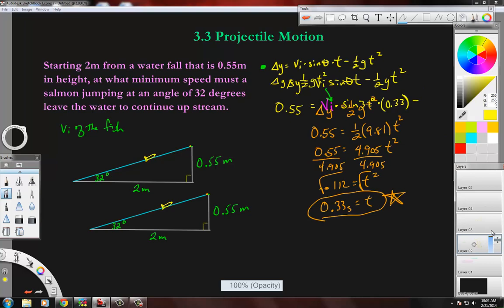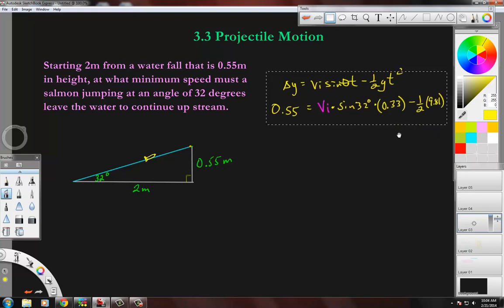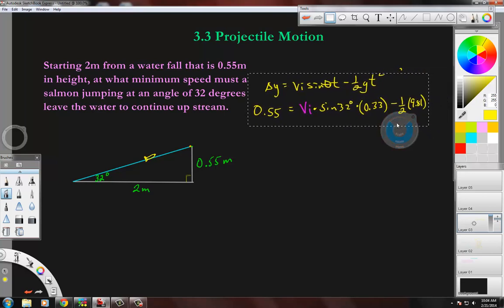That's one half 9.81 times 0.33 squared. Okay, now I'm going to pause this and work these out. I'll be right back.